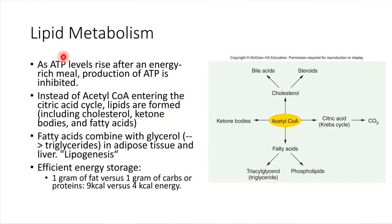Particularly after you've had a meal, that gives you energy, and ATP levels are going to be at a maximum. That's going to trigger this event — instead of acetyl-CoA going into the citric acid cycle, it will be shipped over to help build triglycerides and other sorts of lipids. There's a name for this: it's called lipogenesis, the formation of lipids.